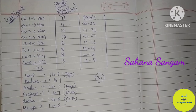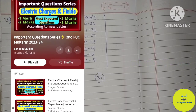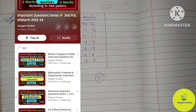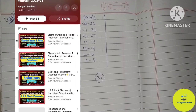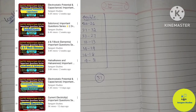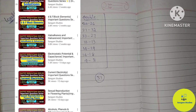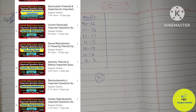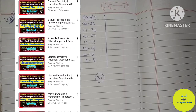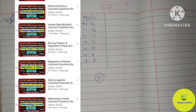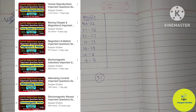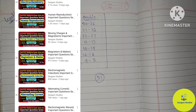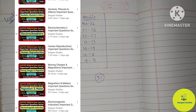I will start my first examination of your important question series. Here is physics, chemistry, biology, and biology. Along with that, physics electrostatic potential and capacitance. Each chapter has an important numerical video. These videos are available in the playlist. The playlist name is the important question series.